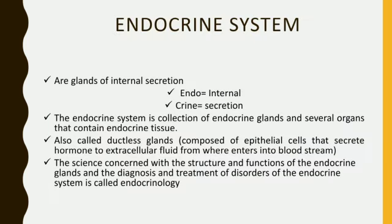The endocrine system consists of glands of internal secretion. 'Endo' means internal and 'crine' means secretion. The endocrine system is a collection of endocrine glands and several organs that contain endocrine tissue. Also called ductless glands, they are composed of epithelial cells that secrete hormones to extracellular fluid, from where they enter into the bloodstream. The science concerned with the structure and functions of endocrine glands, and the diagnosis and treatment of disorders of the endocrine system, is called endocrinology.